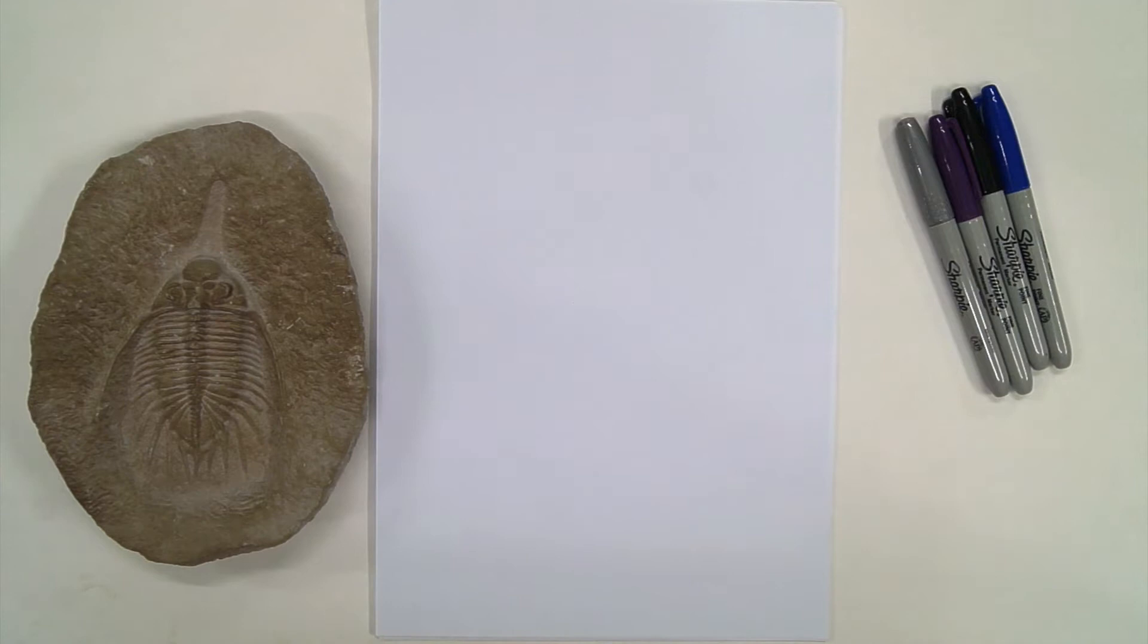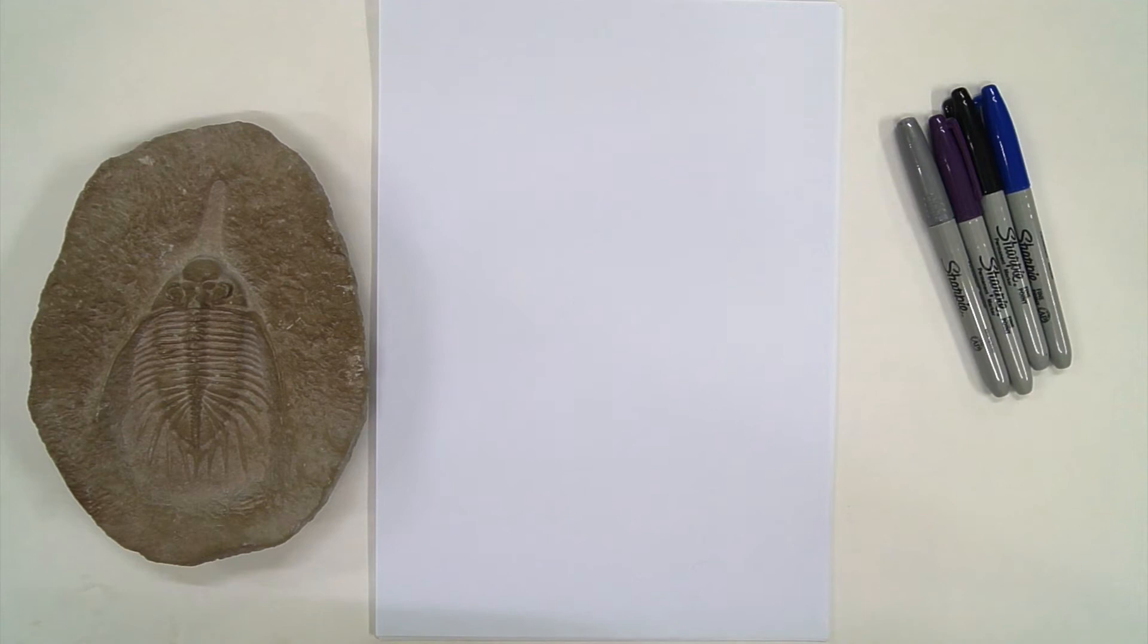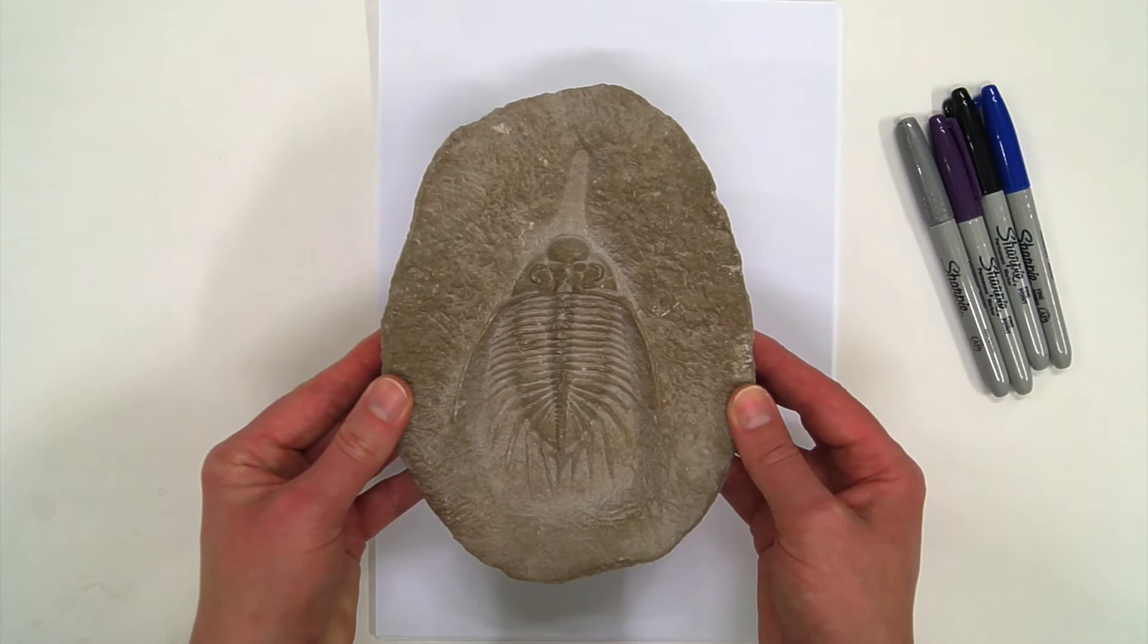So the idea is not to create a scientific illustration like this, which took me over three hours to do, but more of the base sketch that you would take perhaps like 15 minutes but will still get the essential details of your trilobite.